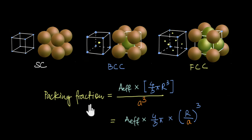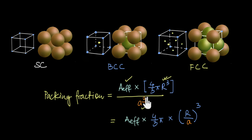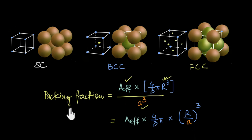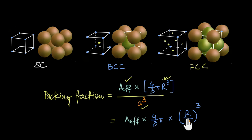By now you have seen that to calculate the packing fraction of any unit cell, you need to know the effective radius of the atoms and the edge length a. If we rearrange and write r³/a³ as (r/a)³, you'll realize that even if you don't know the exact values of r and a, knowing the ratio r/a is enough. The really interesting bit is that this ratio turns out to be constant for each unit cell type.